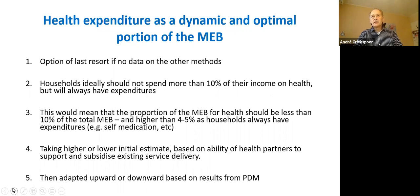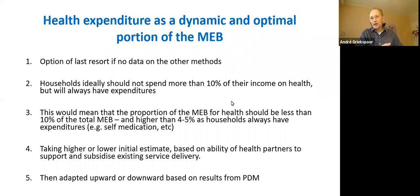The third option, when you have no previous data but do have an MEB for other sectors, is that households in principle should not spend more than 10% on health. Knowing they will always spend something, you can take an educated estimate — a proportion of the other costed MEB needs — to add a health component. If health partners haven't been able to support facilities, you lean toward a higher proportion; if there's good social protection for health, you go lower. Once expenditure survey or PDM data becomes available, you can adjust.